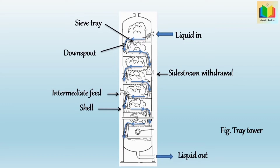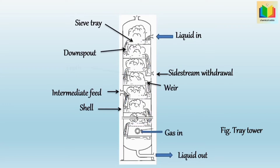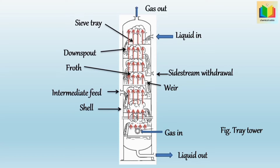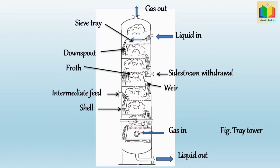The gas passes upward through the openings in the tray such that it bubbles through the liquid to form a froth, then disengages from the froth and passes on to the next tray above. In this way, liquid flows from top to bottom across every tray via the downspout, and gas flows upward by bubbling through the pool of liquid and passes to the tray above.